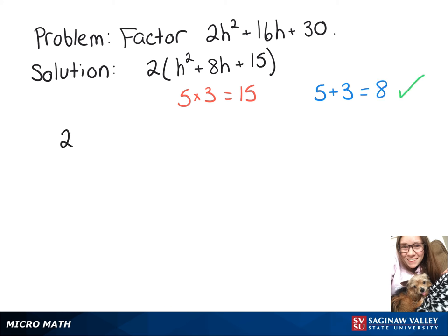So we can rewrite 2h squared plus 16h plus 30 as 2 times h plus 5 times h plus 3.